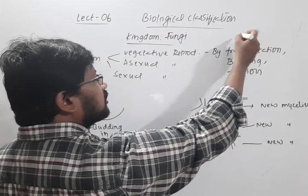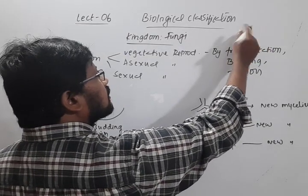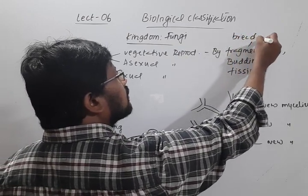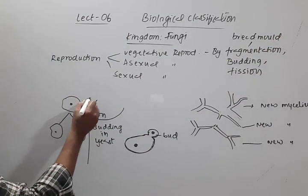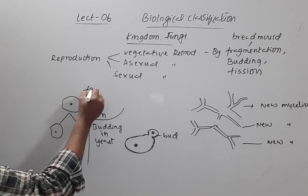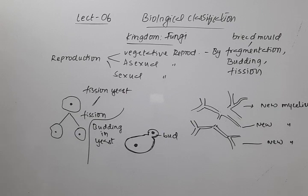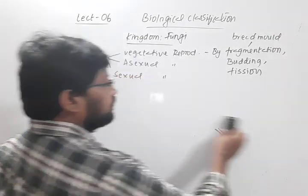Examples of fragmentation can also be seen in bread mold. Fission can also be seen in yeast, which we call fission yeast. That covers vegetative reproduction by fragmentation, budding, and fission.